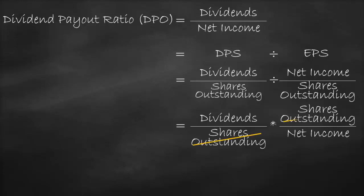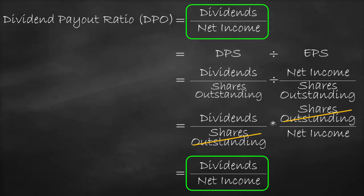Shares Outstanding will offset Shares Outstanding, so the dividend payout ratio equals Dividends divided by Net Income. This is the same as our original formula. Therefore, we can express the dividend payout ratio as Dividends per share divided by Earnings per share.